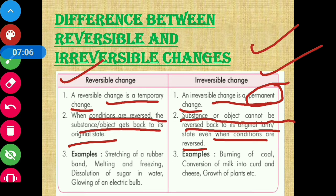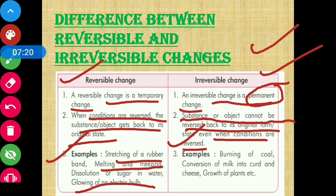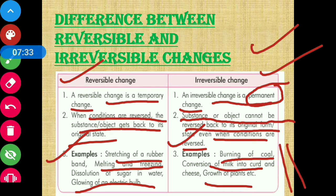Examples of reversible changes include: stretching of a rubber band, melting and freezing, and glowing of an electric bulb. Examples of irreversible changes include: burning of coal, conversion of milk into curd, and growth of plants.